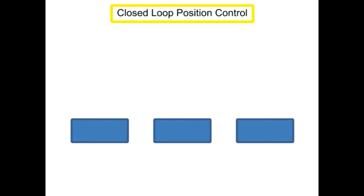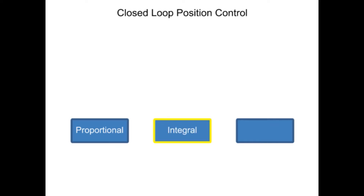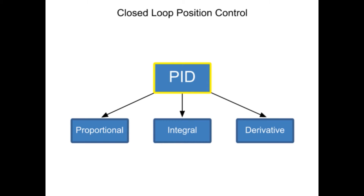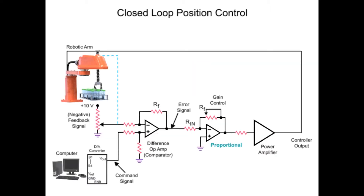A closed-loop control system for position control is comprised of proportional, integral, and derivative circuits and is often referred to as a PID. The operation of PID mode control is demonstrated in the following robot arm position circuit.